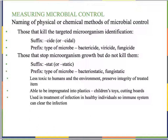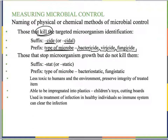When measuring microbial control, we use naming conventions for physical or chemical methods. Those that kill the targeted microorganism use the suffix -cide or -cidal. The prefix indicates the type of microbe. Bactericide kills bacteria completely. Viricide kills viruses. Fungicide kills fungi. The -cide suffix at the end, combined with the name of the microbe at the beginning, tells us what's being killed.